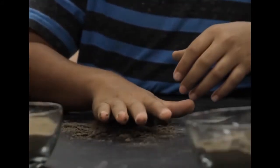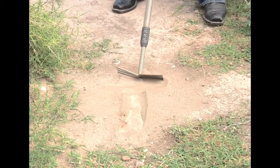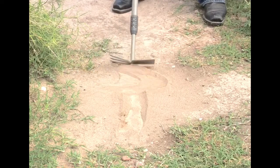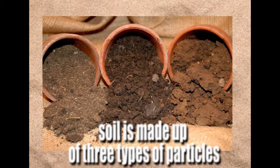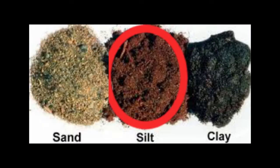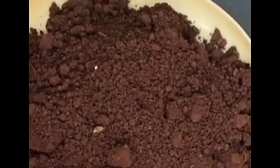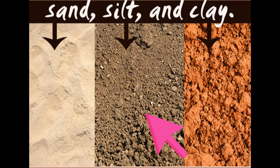There are many types of soil. We can classify soil according to their texture, color, and their ability to retain water — that is, their ability to keep water. Let's talk about texture. Soil is made up of three types of particles: sand, silt, and clay. The texture of a type of soil depends on the amount of sand, silt, and clay present in it.